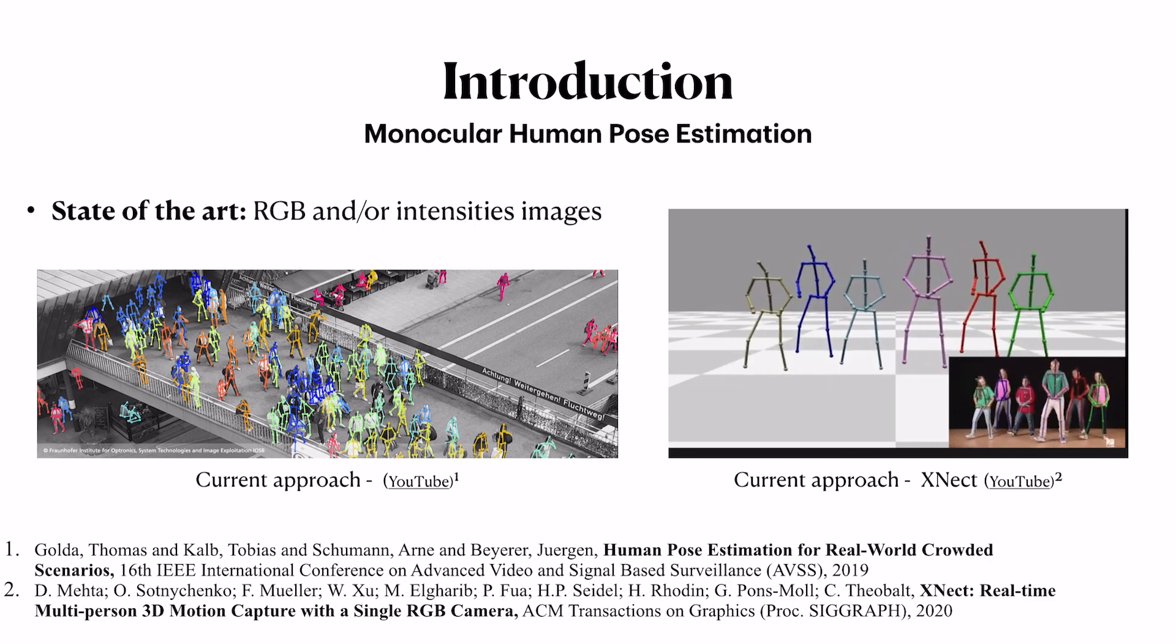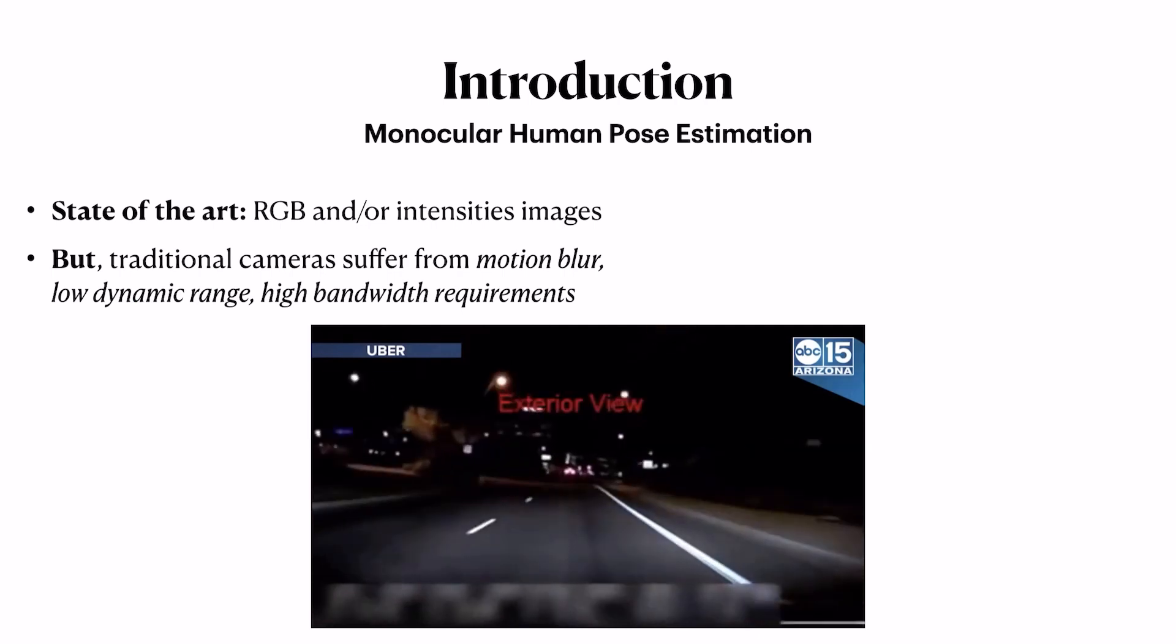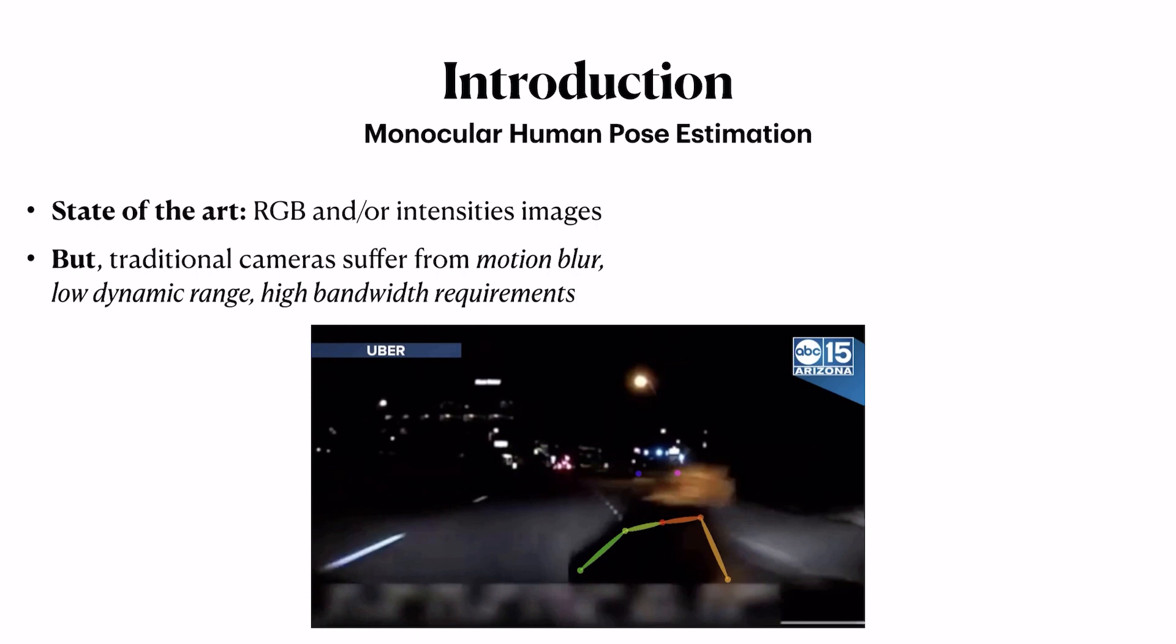However, standard RGB cameras have some limitations. In particular, they don't work really well at night. You can see in the video by an autonomous driving car the accident that occurs partially due to the limitation of standard cameras at night. Traditional cameras also suffer from motion blur and low dynamic range and they don't work really well for real-time applications at night.